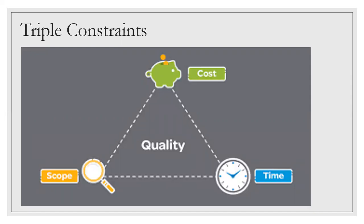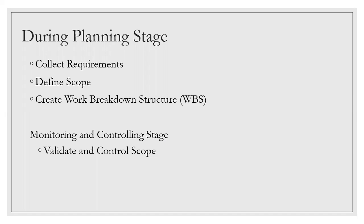That's why having solid knowledge in scope, cost, and time is so important — you should know not just what they are, but how they are derived and how they connect with each other. There are two kinds of scope: product scope, mainly for product-based companies releasing a product, and project scope. Project scope is all the work done by the project team to deliver the product of the project.